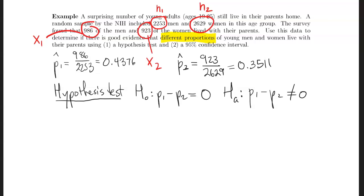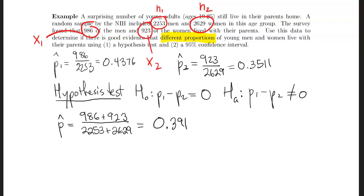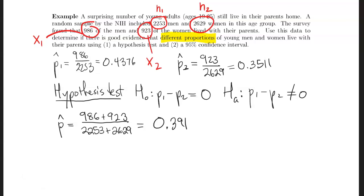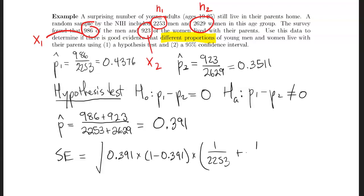To compute the standard error, we need the pooled sample proportion p̂, which is the total number of successes divided by the total number of trials. That turns out to be 0.391. Note that p̂ should fall between p̂1 and p̂2 since it's an average — 0.391 is in the appropriate range. The standard error is then the square root of 0.391 times (1 minus 0.391) times (1/2253 + 1/2629), which equals 0.014.